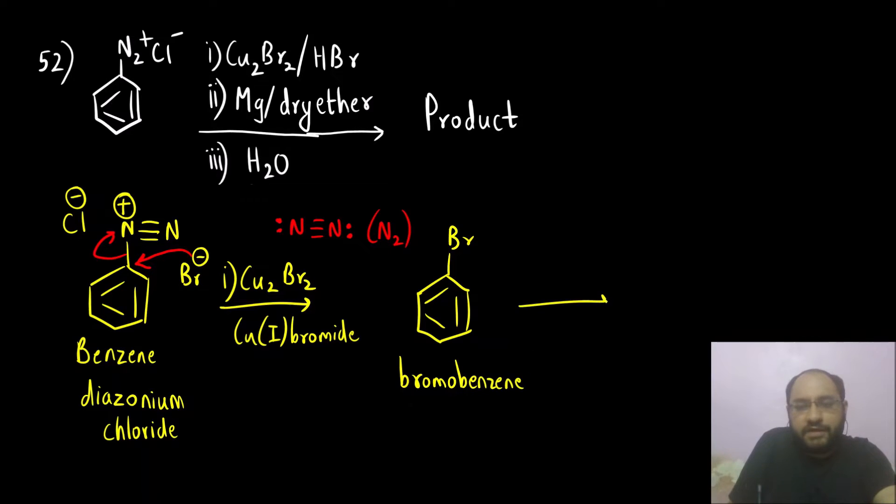And alkyl halide we know when it reacts with magnesium in presence of dry ether. What is dry ether? It is a solvent. Solvent means it is a compound used to dissolve this bromobenzene. This will react with magnesium. What we will get is we will get Grignard reagent.